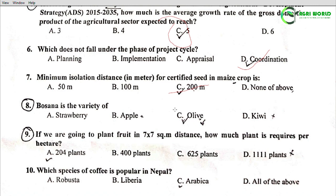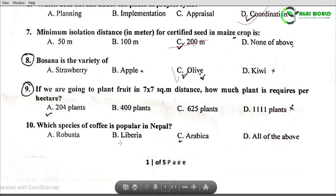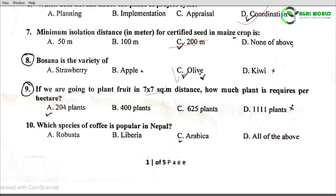Question 9: If we are going to plant fruit at 7 x 7 square meter distance, how many plants are required per hectare? Options: 204 plants, 400 plants, 625 plants, 1100 plants.